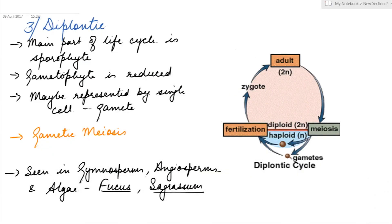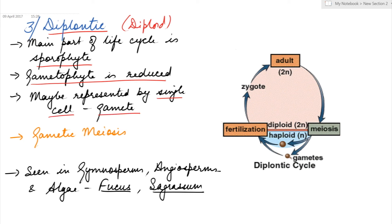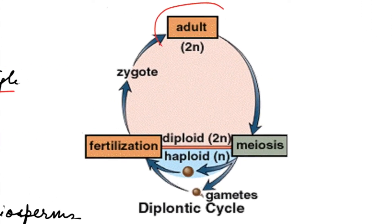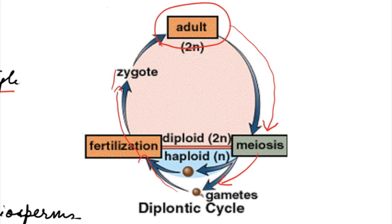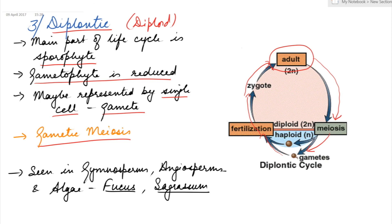The third type is the diplontic life cycle. As the name shows, the main part of the life cycle is diploid — that is, the sporophyte — while the gametophytic generation is reduced and represented by a single cell, the gamete. Meiosis occurs prior to the formation of gametes, hence it is gametic meiosis. The sporophyte produces gametes after meiosis, which undergo fertilization to form the zygote, which then divides to form the sporophyte. This life cycle can be seen in higher plants like gymnosperms and angiosperms, and in algae like Fucus and Sargassum.